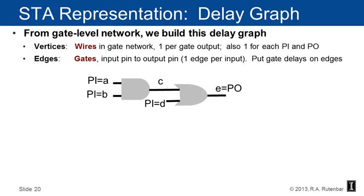What do we know about the delays for this logic network? The delays are from input pins to output pins. There's an input-to-output delay A to C in the AND gate — delta equals 2 — and a delay from B to C of 2. The delay from C to E and from D to E in the OR gate is 3. In a real logic network these numbers aren't all the same; they can be anything appropriate to model the physical reality of the gate.